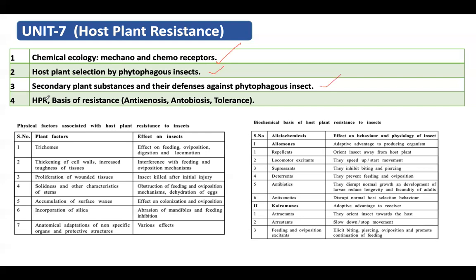Coming to host plant resistance and the basis for resistance — you need to understand what host plant resistance is exactly. The definition given by Maxwell is: heritable characteristics possessed by the plant which influence the ultimate degree of damage done by the insect. You need to study the basis of resistance, mechanism of resistance, and the advantages and limitations of host plant resistance.